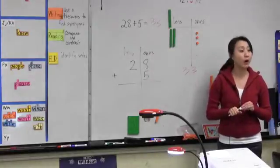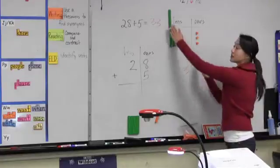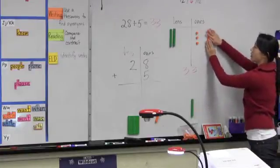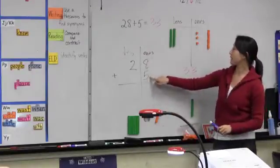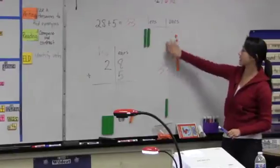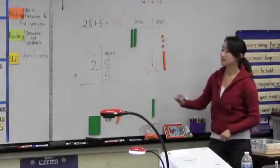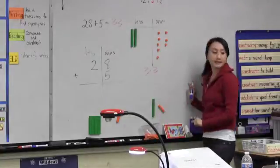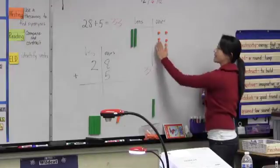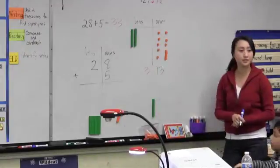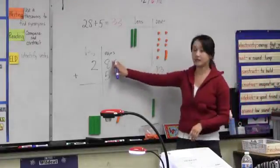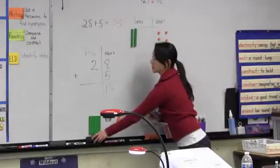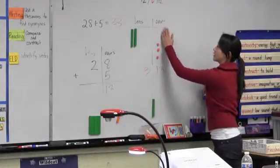Now watch this — we're going to go backwards. Remember when we added and we said eight plus five ones, the eight ones plus the five ones was thirteen altogether? I'm going to trade it back for the ten ones. We cannot put thirteen ones in the ones place, so we took ten ones and regrouped it for a ten. Then after I regrouped it, I traded it — I have to put it in the tens place.